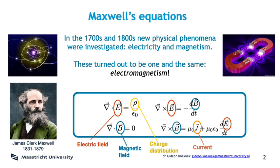Historically, special relativity was born out of Maxwell's equations, which were finalized in the mid-1800s. These equations tell us that electric forces are mediated by an electric field E and that magnetic forces are mediated by a magnetic field B. Originally, the electric field was found to be made by charges and the magnetic field by moving charges — currents. In addition, Maxwell's equations state that one can turn electric fields into magnetic fields and vice versa: shaking an electric field around will produce a magnetic field, and shaking a magnetic field around will produce an electric field. This is, for instance, how a dynamo works that powers your bicycle light.